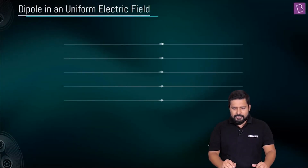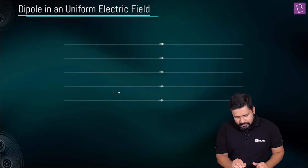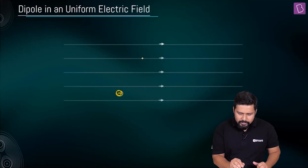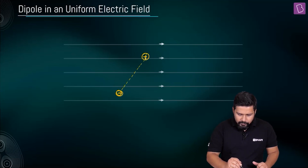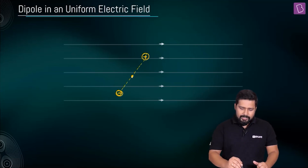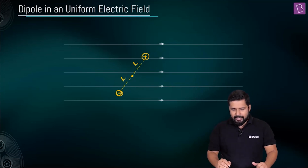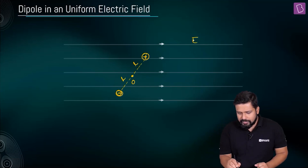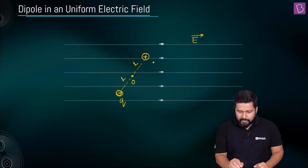If you have a uniform electric field and you have placed a dipole — let us say this is minus q and this is your plus q — the center of the dipole is somewhere over here and the distance from the center is equal to L and L. This is the center of the dipole, let us call it O. This is the uniform electric field, and the charges are plus q and minus q.